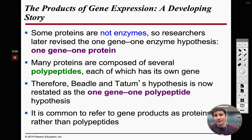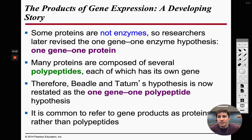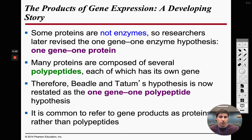Going back to the 1902 experiment, they were talking about enzymes, but some proteins aren't enzymes. Beadle and Tatum updated this to the hypothesis of one gene for one protein. They went even further and said proteins are polypeptides, so more specifically: one gene is going to code for one polypeptide.